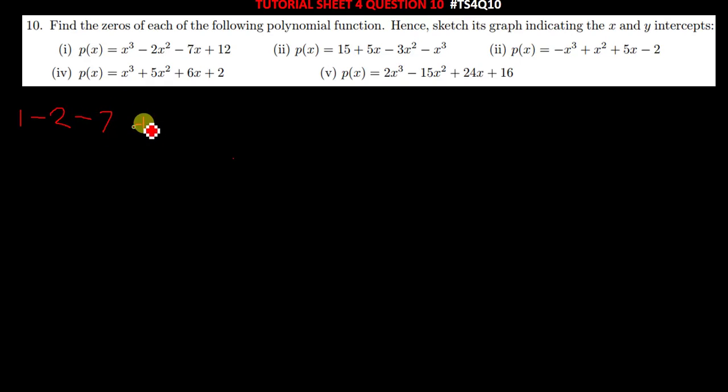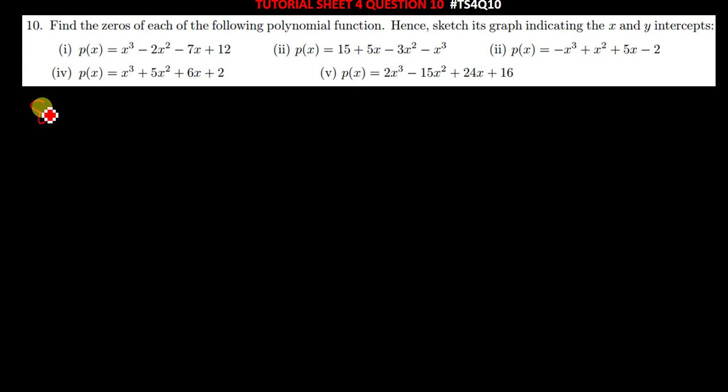So we can try these numbers. We try 1: when you put 1 there, we're going to have 1 minus 2 minus 7, which cannot give us 0. So that has refused. Let us try 2: when we put 2 there, we get 8, then another 8, then negative 14. It has refused as well.